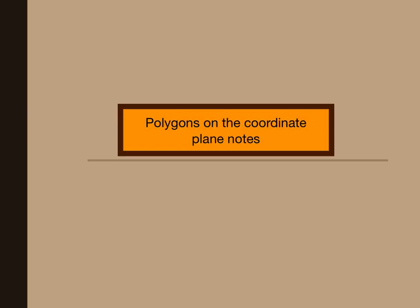Today you're going to be learning how to create polygons on a coordinate plane, how to find distance between points on a coordinate plane, and how to use those points or polygons to find the perimeter and area of different shapes.